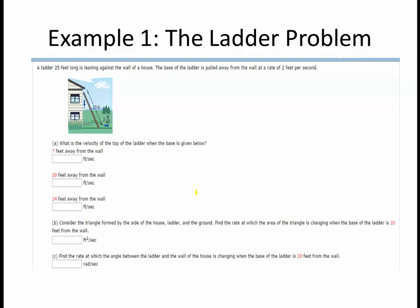Example one is going to be a ladder problem. In this particular problem, taken from WebAssign in Larson's Calculus 10th edition, a ladder 25 feet long is leaning against the wall of a house. The base of the ladder is pulled away from the wall at a rate of 2 feet per second. We're going to determine the velocity of the top of the ladder, the rate at which the area of the triangle is changing, and the rate at which the angle between the ladder and the wall is changing when the base is 20 feet from the wall.